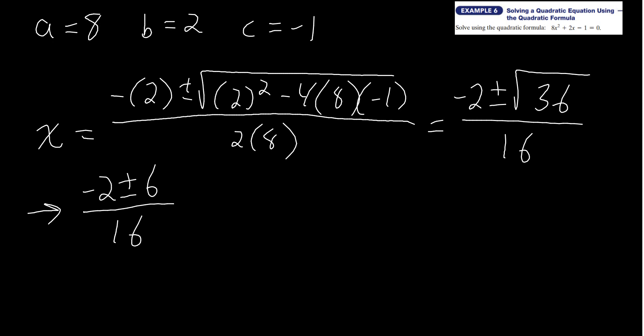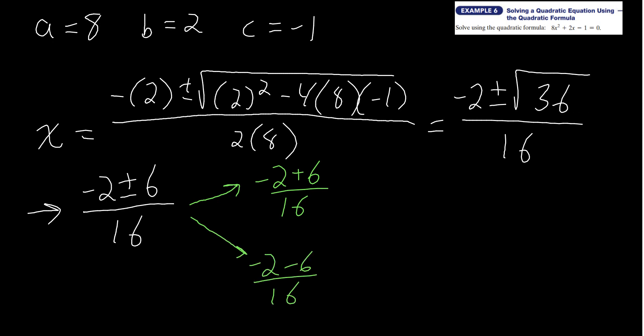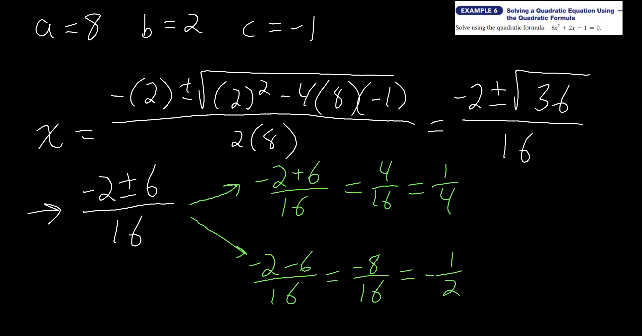This splits into two equations. First: negative 2 plus 6 over 16 — negative 2 plus 6 is positive 4, so 4 over 16 equals 1/4. Second: negative 2 minus 6 over 16 — negative 2 minus 6 is negative 8, so negative 8 over 16 equals negative 1/2. So our two solutions are x equals 1/4 and x equals negative 1/2.